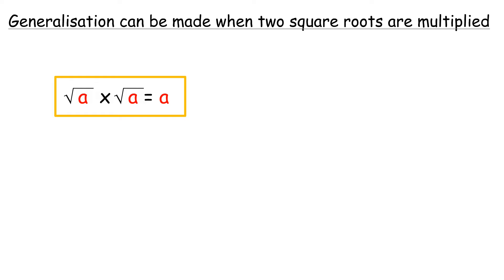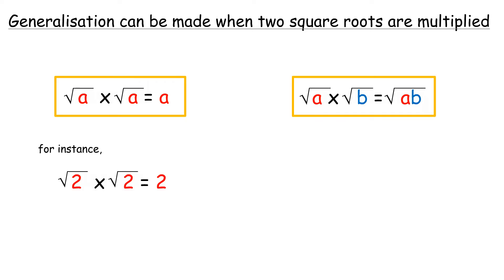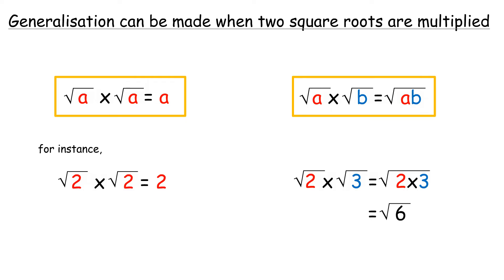A generalization can be made when two square roots are multiplied. The product of two identical square roots equals the number itself. That is, square root of a times square root of a equals a. For instance, square root of 2 times square root of 2 equals 2. The product of two different square root numbers: square root of a times square root of b equals square root of ab. For instance, square root of 2 times square root of 3 equals square root of 6.